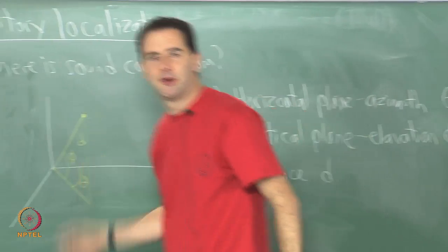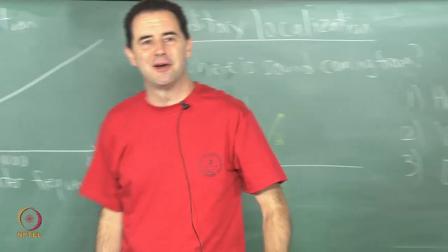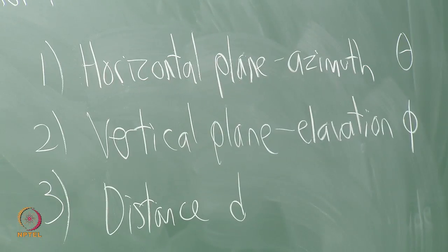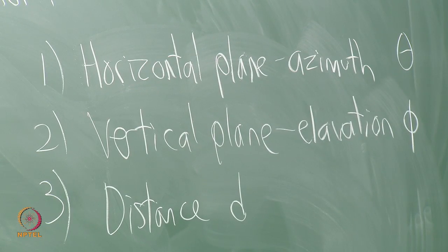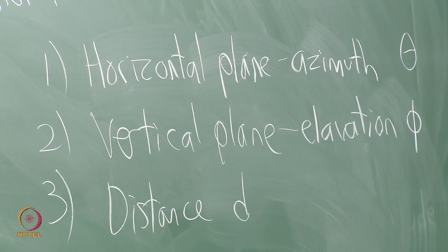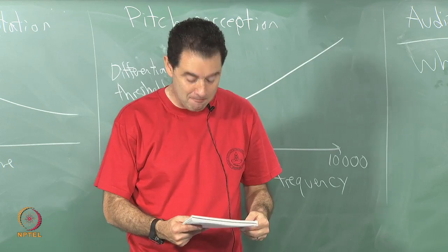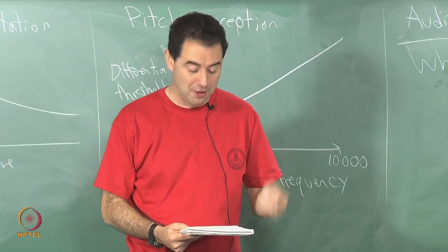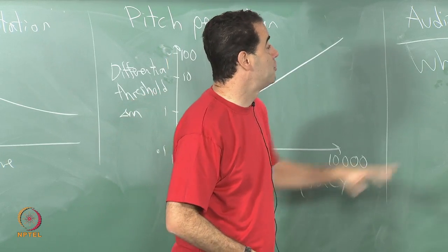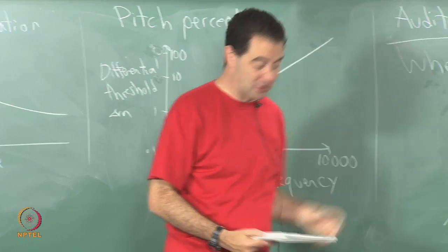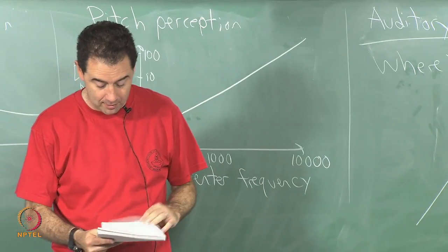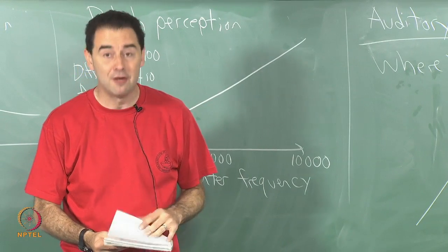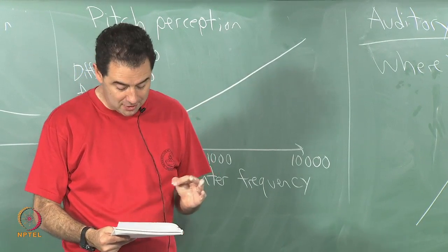The second coordinate is how high or low the sound is — this is called elevation, represented with phi. The third is distance, represented with d. Using spherical coordinates is convenient given the geometry of the ears and the type of information we can infer about where sounds come from.